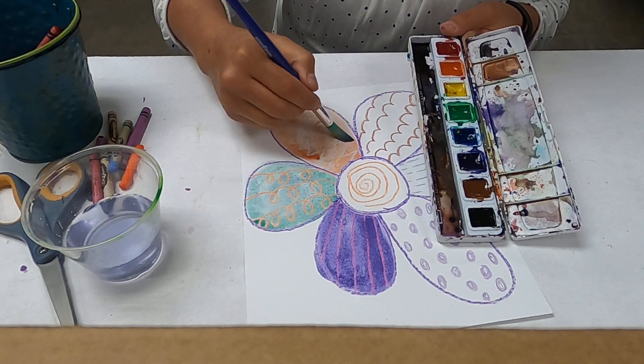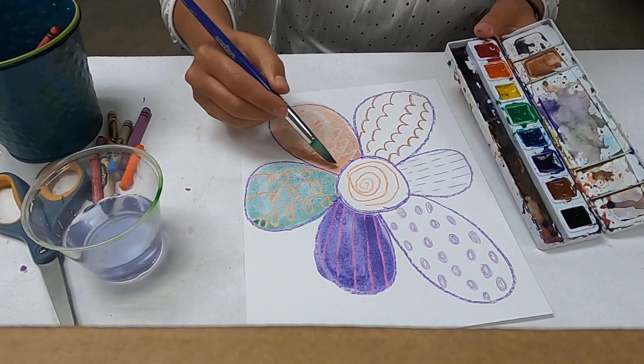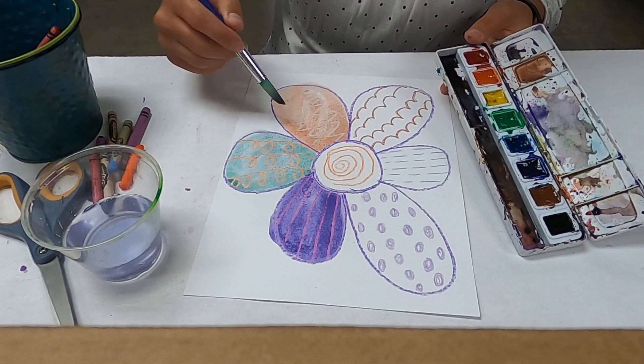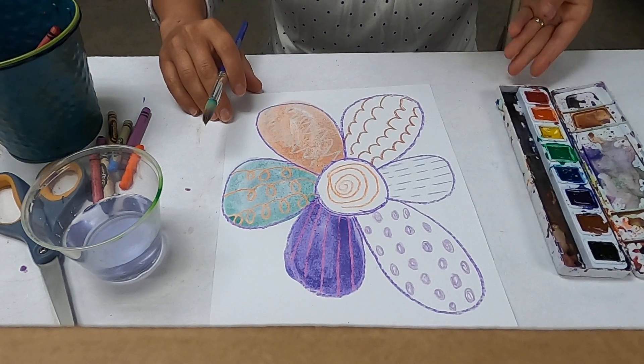You see how your lines show through? So there you go, there is our flower made out of different kinds of lines.